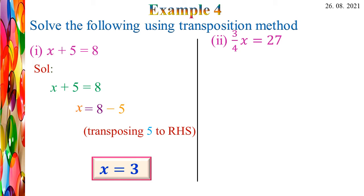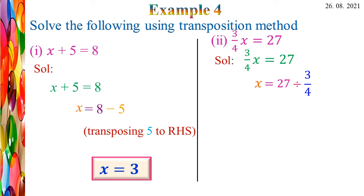Let's see the second problem: (3/4)X = 27. Let us find the solution. Take the equation (3/4)X = 27. Here the variable is X. So X = 27 ÷ (3/4), because the opposite of multiplication is division. So 3/4 transposing to the RHS becomes divided by 3/4.